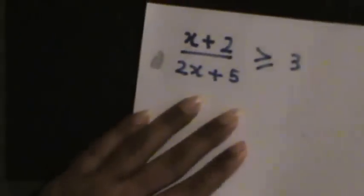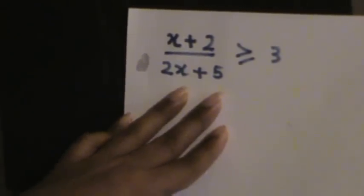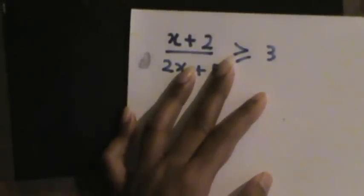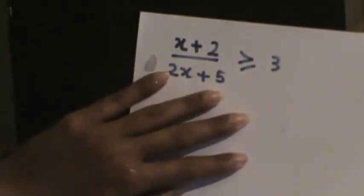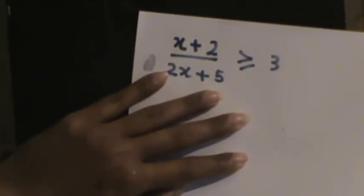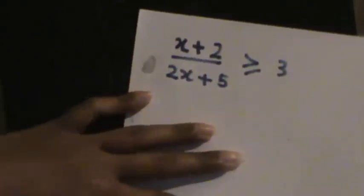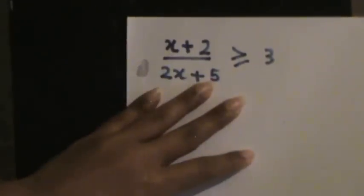To begin with, I'll use a quotient function where both the numerator and the denominator have linear expressions. So let's take an example: if you are given (x + 2) divided by (2x + 5) is greater than or equal to 3, solve for x. Now when you have a linear expression on its own, you know how to solve it.